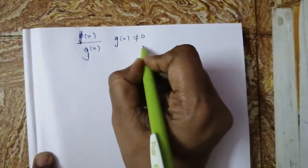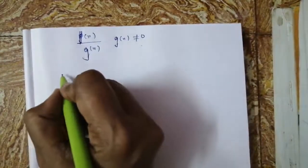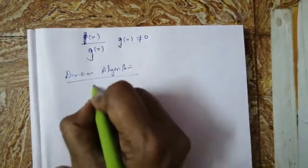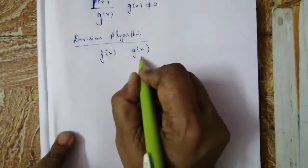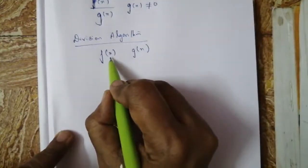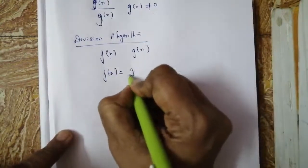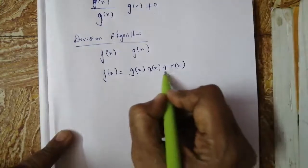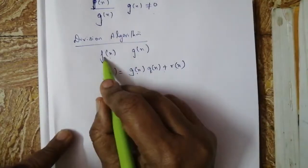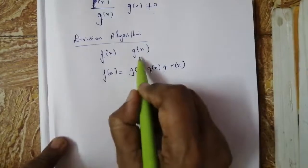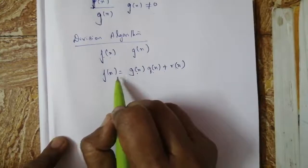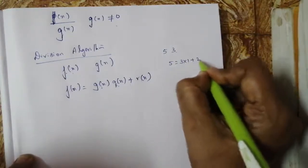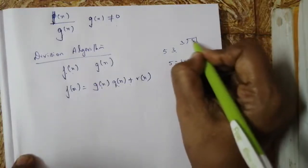f(x) divided by g(x), where g(x) ≠ 0, is called a rational function. Using the division algorithm, dividend equals divisor times quotient plus remainder.